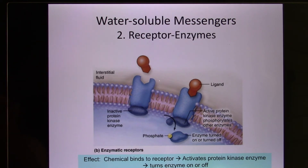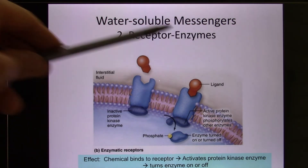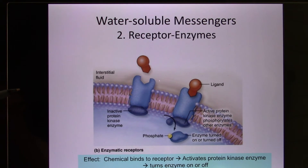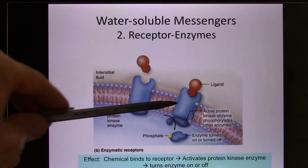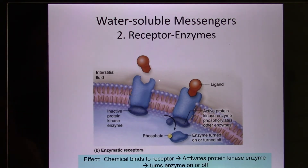The second category is enzyme receptors. Enzymes trigger chemical responses inside the cell, so these receptors activate enzymes when a messenger binds.